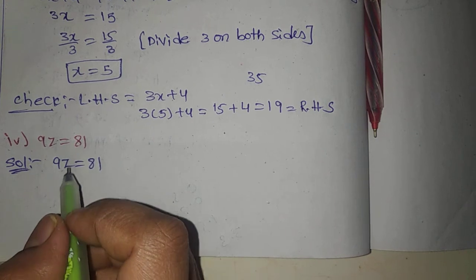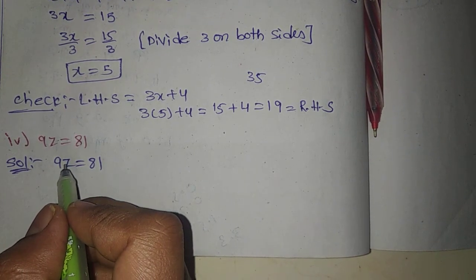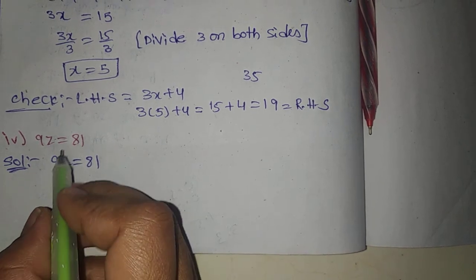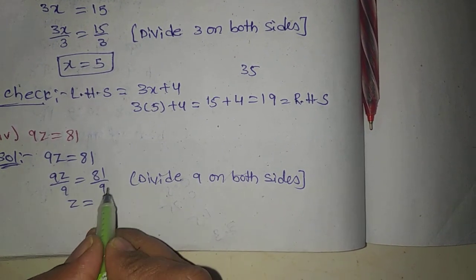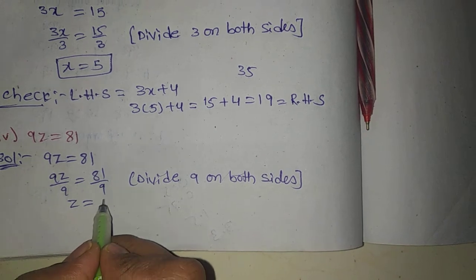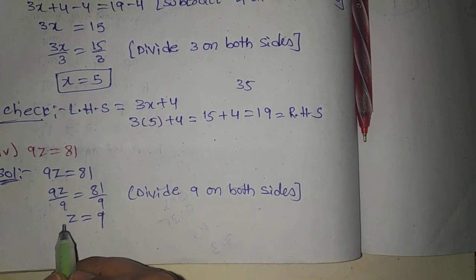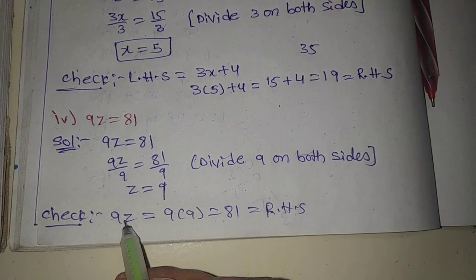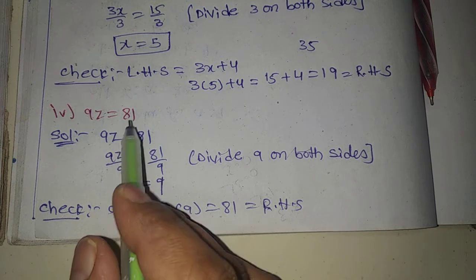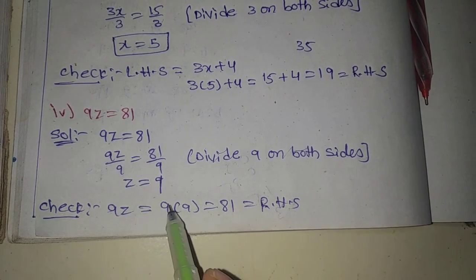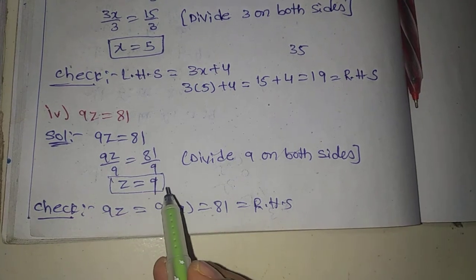Fourth one: 9z is equal to 81. So 9 into z — we divide both sides by 9. 9 cancels. z is equal to 81 divided by 9, which is 9. Check: 9z LHS — 9 into 9 is 81. RHS is 81. LHS equals RHS. z value 9 is the correct one.